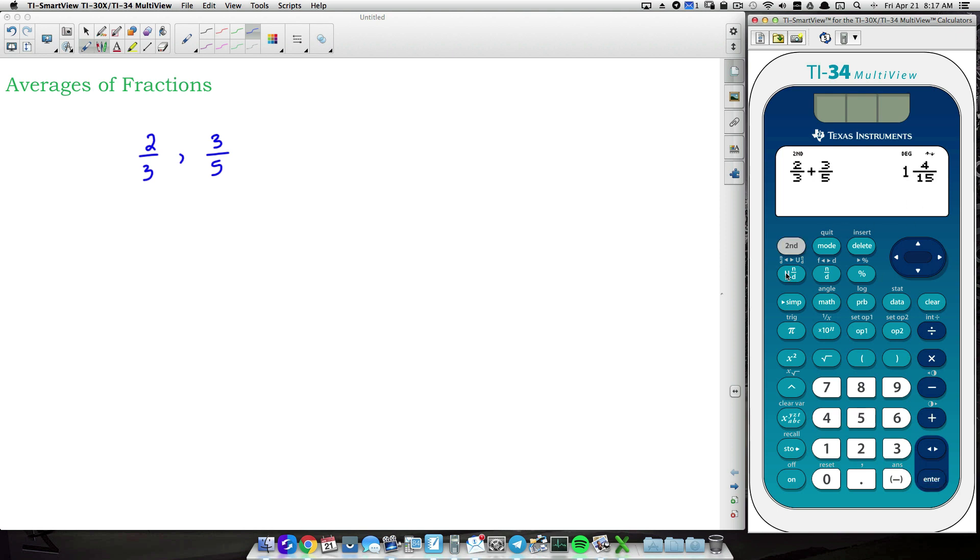so 1 and 4 fifteenths. I'm just going to convert that to an improper fraction. So we got the sum of those two fractions is 19 over 15. Let's divide that by 2 because we're adding two fractions. And this is going to be our average of these two fractions. 19 over 30.